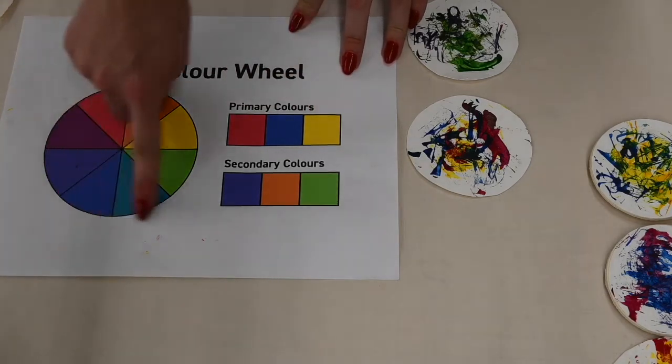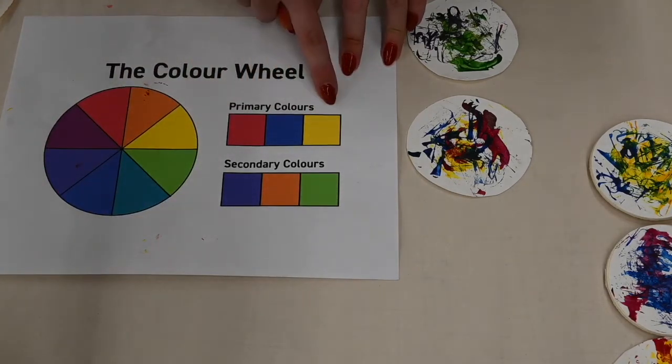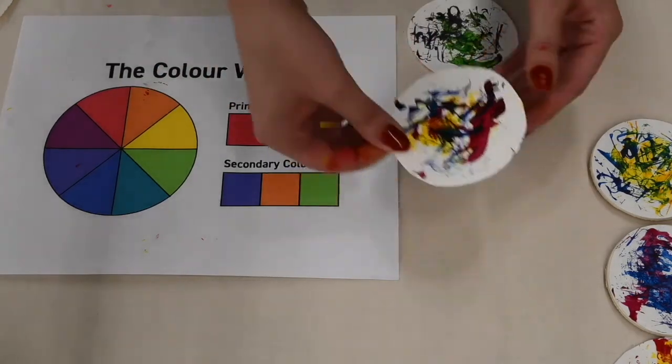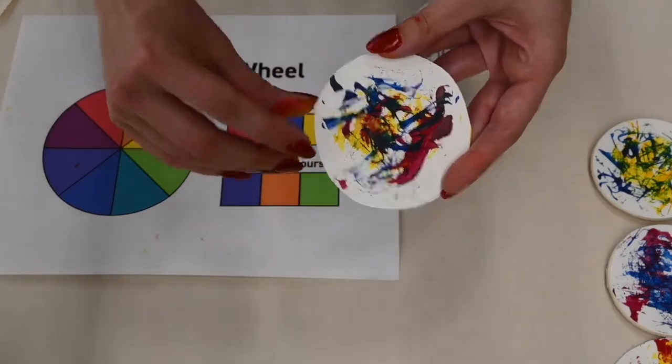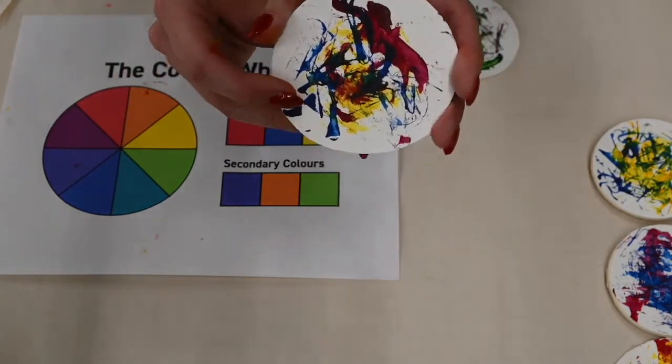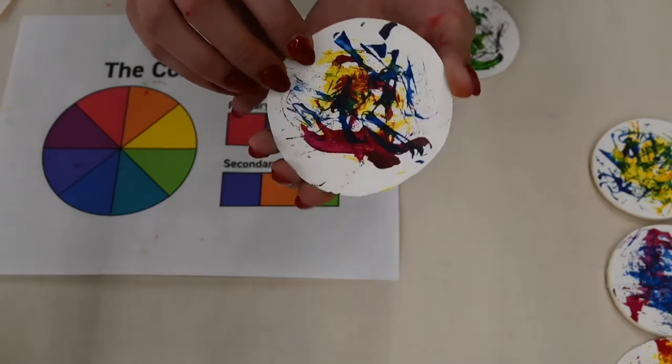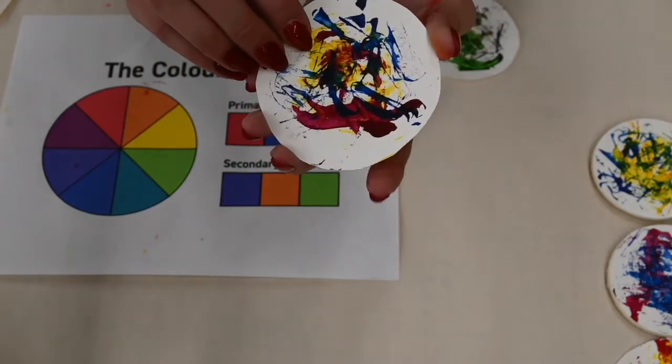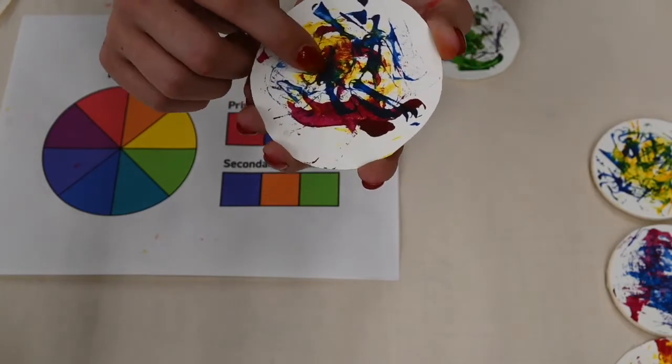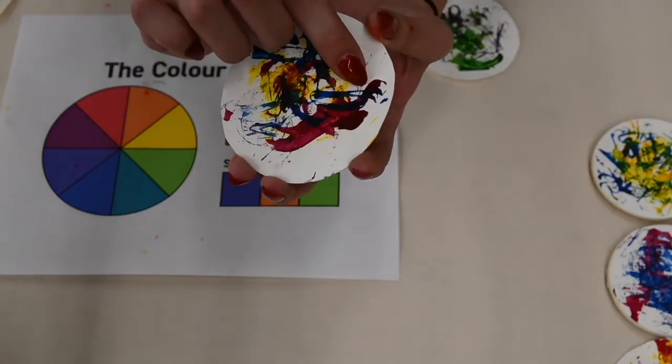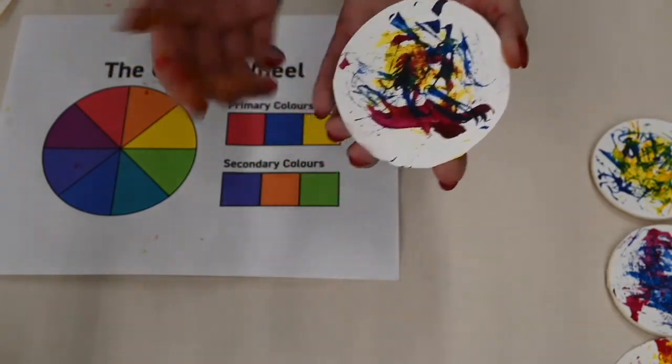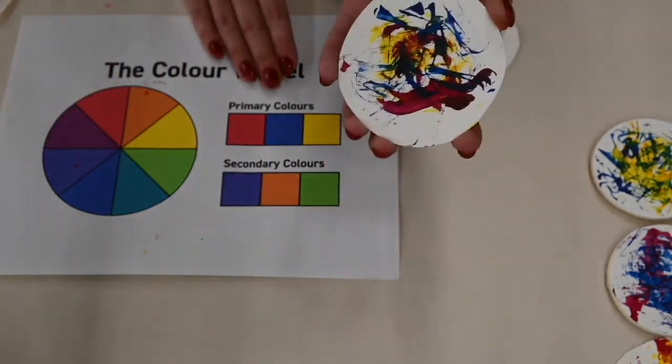So on our color wheel it doesn't actually show us what we're going to get if we combine all three. So I wanted to test that out. So you can see I have my yellow, my reds, my blues. And it might be hard to tell on camera, but hopefully if you do this one yourself you'll be able to see. We have some browns in here. Even a little bit over here. So if we combine all three of our primary colors we get a nice brown.